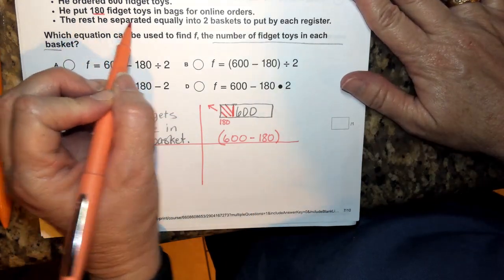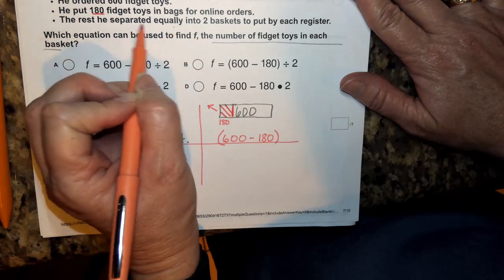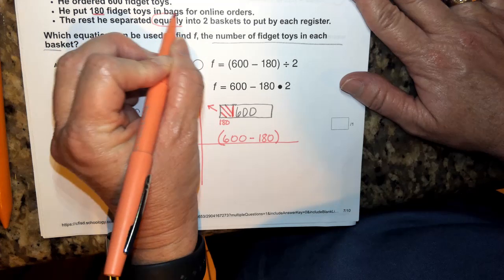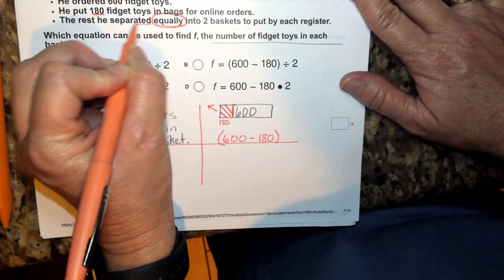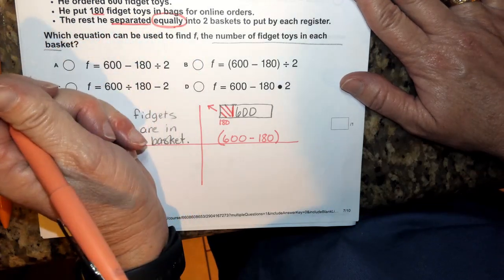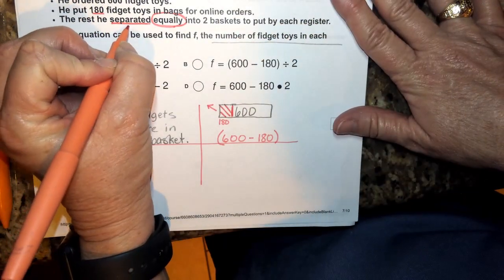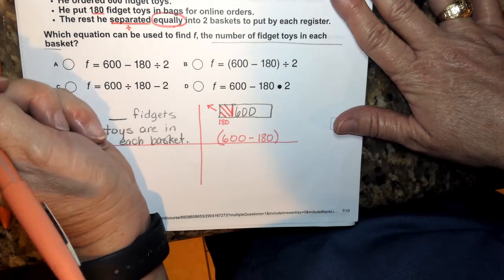It says he separated the rest equally into two baskets. So there's two words that stand out here. The word separated, because anytime we separate something, it's like we're dividing it. So I'm going to go ahead and I'm going to put my division symbol there.